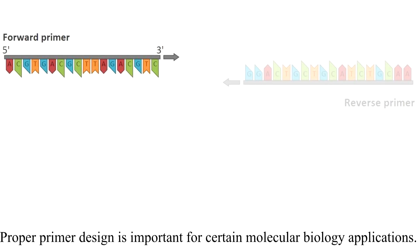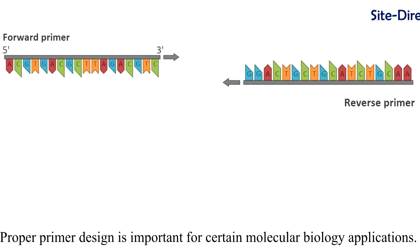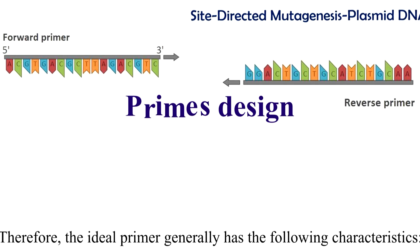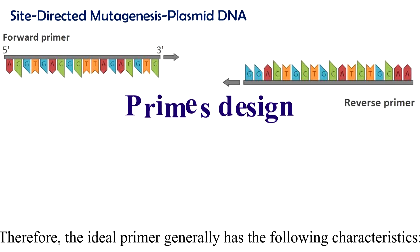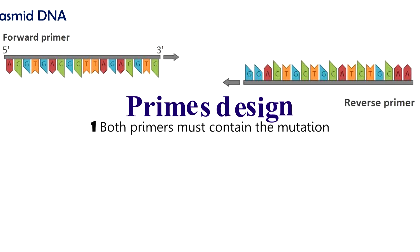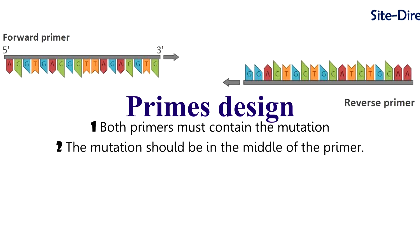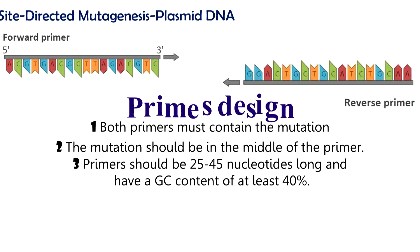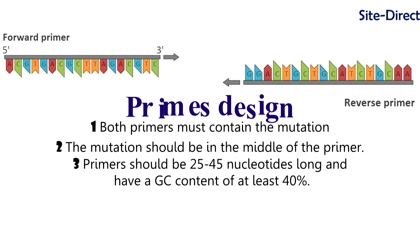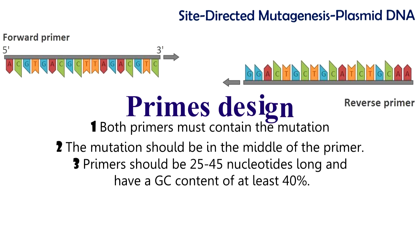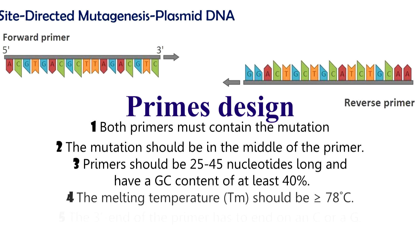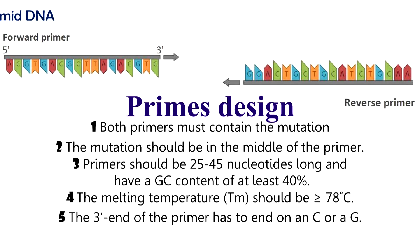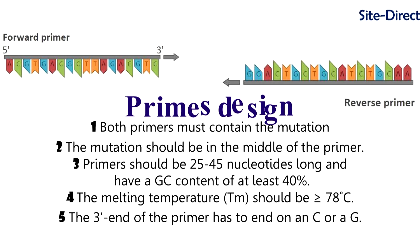Proper primer design is important for certain molecular biology applications. The ideal primer generally has the following characteristics: both primers must contain the mutation; the mutation should be in the middle of the primer; primers should be 25-45 nucleotides long and have a GC content of at least 40%; the melting temperature should be 78°C; and the 3' end of the primer has to end on a C or G.